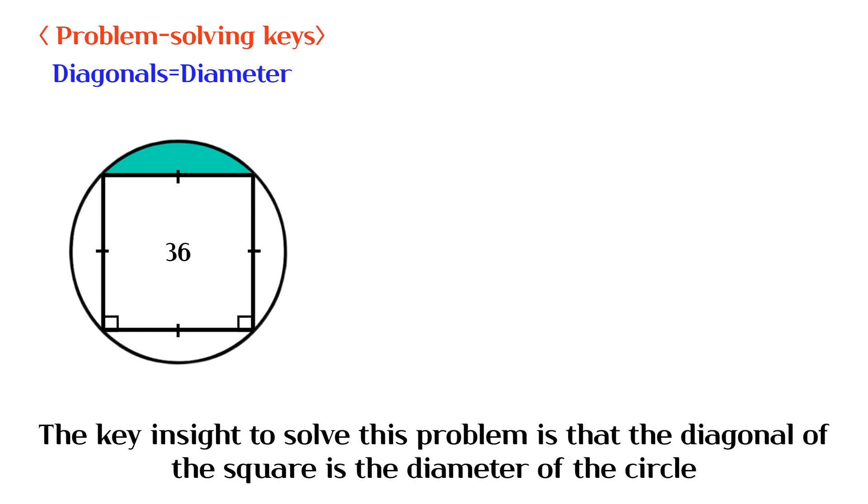The key insight to solve this problem is that the diagonal of the square is the diameter of the circle.